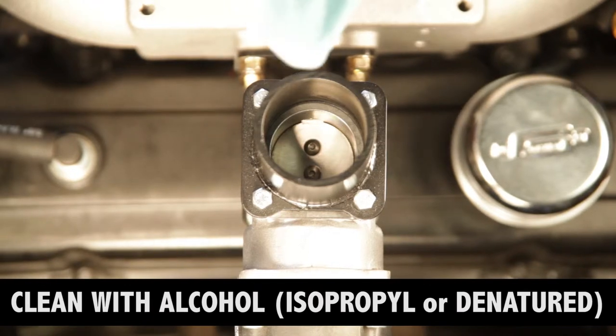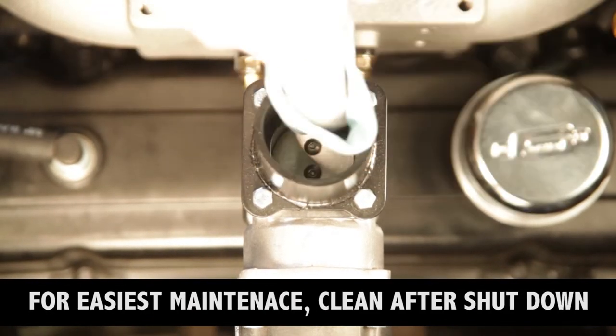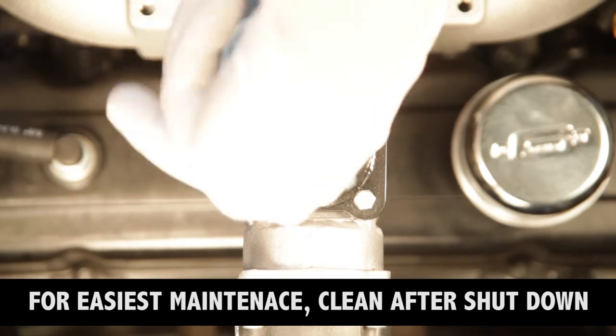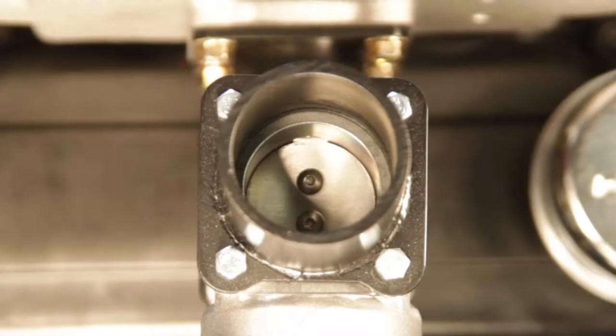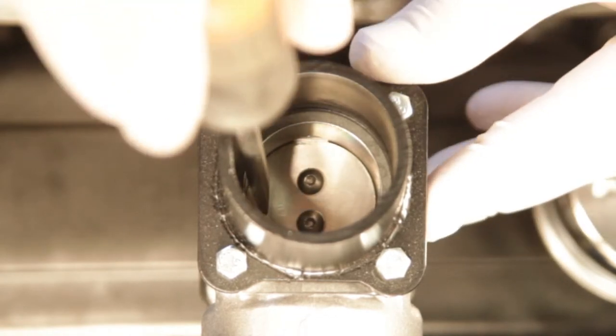The best time to do this will be right after you shut down the engine, when any tar will still be warm and liquid. Just squirt or pour a little alcohol on the plate and shaft and move it back and forth with your screwdriver.